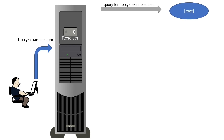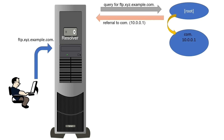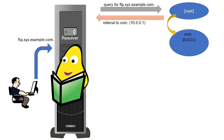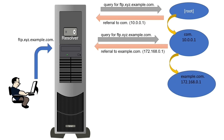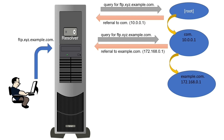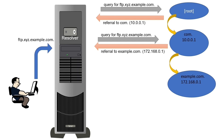The resolver system sends the query to the nearest root name server. The root name server provides a referral to the com name server, including its IP address. From the referral, the resolver system learns the com name server's IP address and sends the same query to the com name server. The com name server provides a referral to the example name server, including its IP address. The resolver system then sends the query to the example name server.